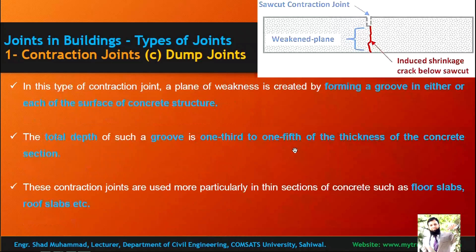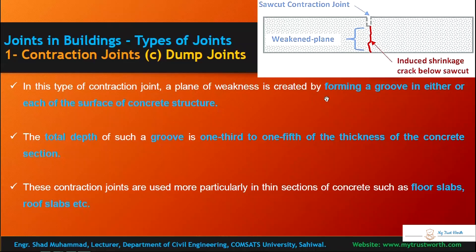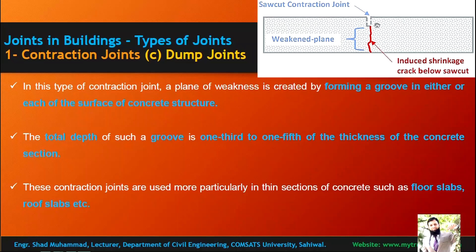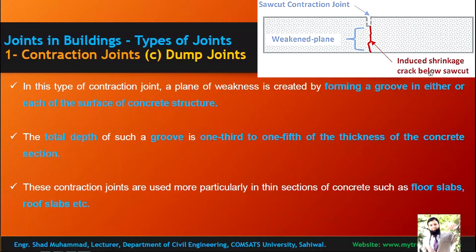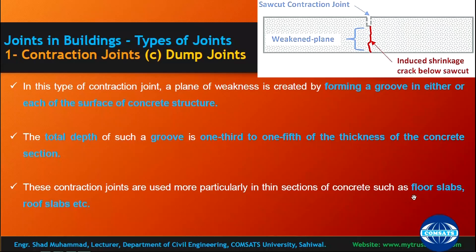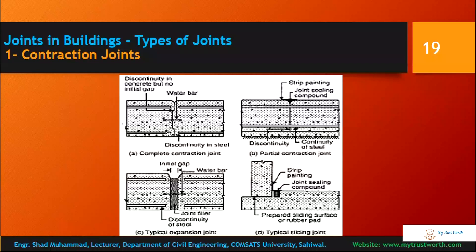The third type is a dump joint. A plane of weakness is created by forming a groove in either or each surface of the concrete structure. The total depth of the groove is one-third to one-fifth of the member thickness. This self-created groove introduces a plane of weakness and induces shrinkage cutting below the socket, which is automatically weakened. Dump joints are used more particularly in thin structures such as floor slabs and roof slabs.